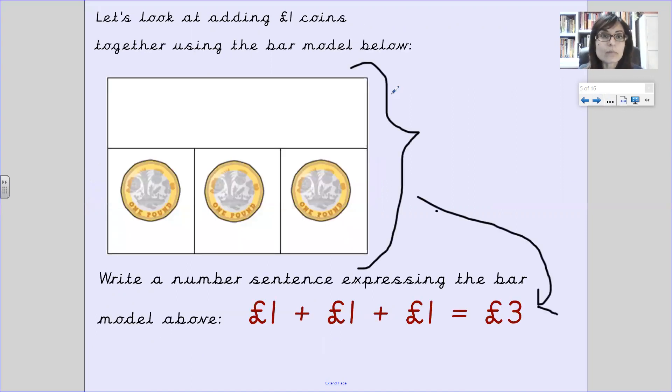Let's look at adding one pound coins. Here we've got a bar model, which we have used previously. We can use a bar model to say one pound, add one pound, add one pound equals three pounds in total. So the whole bar is three pounds and it's made up of three one pound coins. One, two, three.